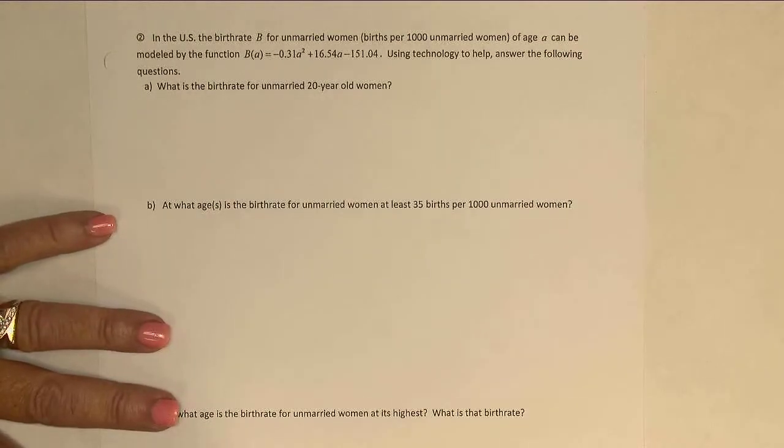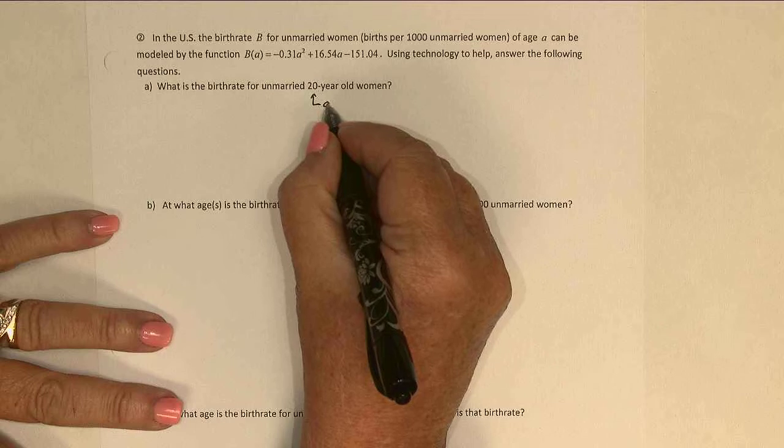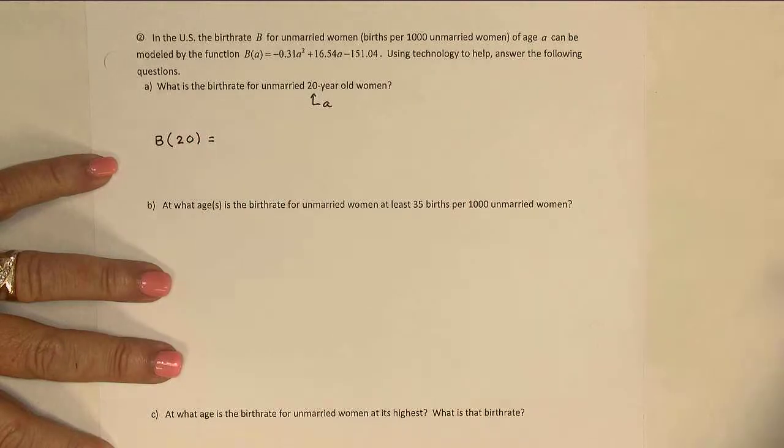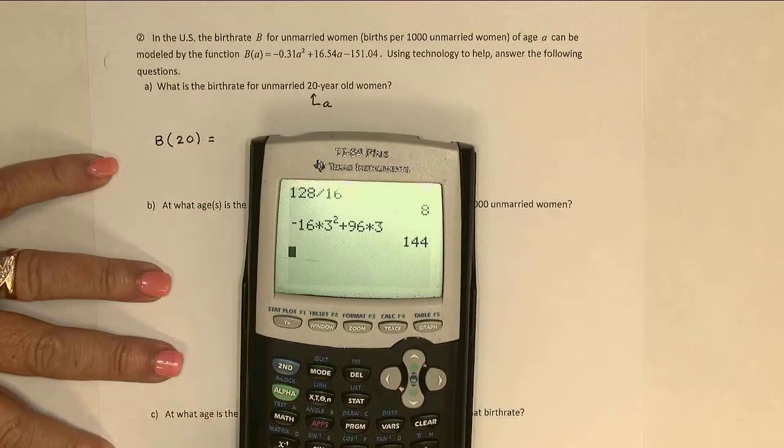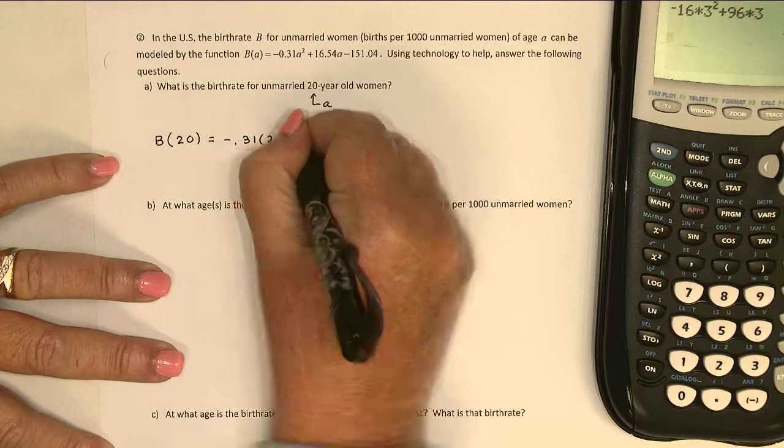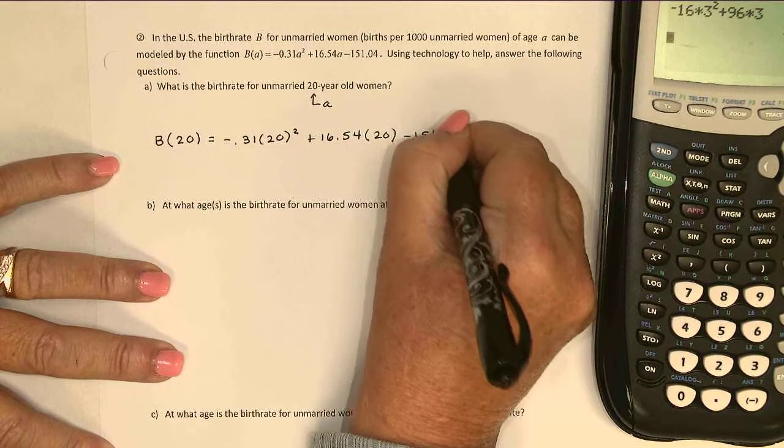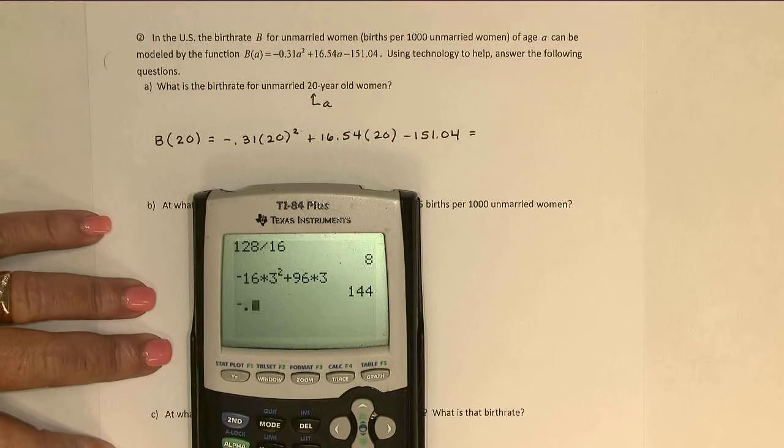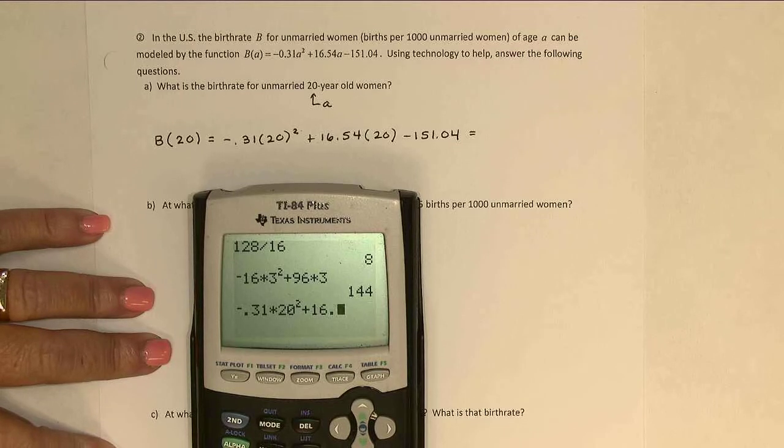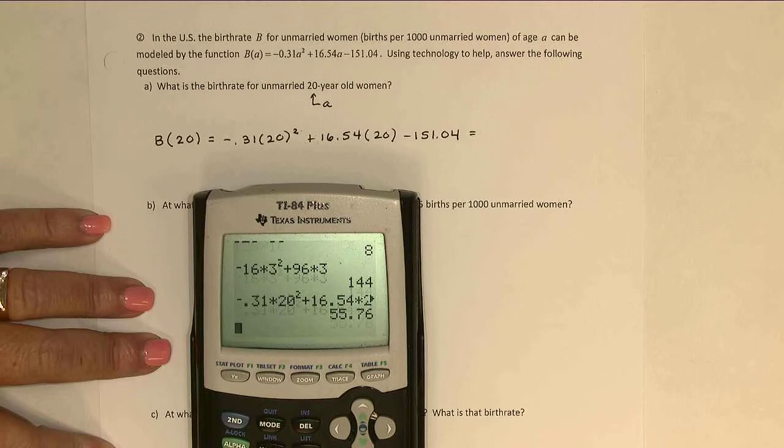First of all, what is the birth rate for unmarried 20-year-old women? So I'm giving you the age here, that's the A value, and I want us to find B of 20. So let's see, actually let me just jot it down first. Plugging 20 in for A gives me 55.76.